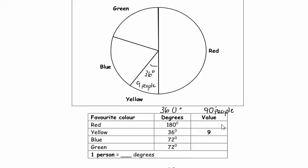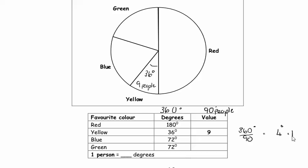You know this is 90 people — the whole circle is 90 people. So you divide: 360 degrees divided by 90 people gives you how many degrees one person is. That's 4 degrees. So we've got 4 degrees equals 1 person.